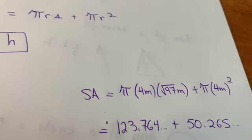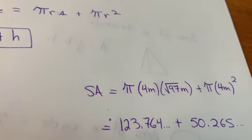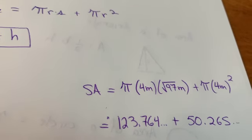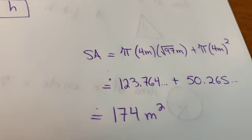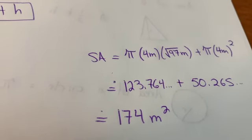As soon as you introduce π and square roots for that matter, you're going to get decimals that go on forever. Add these together and I rounded it to the nearest square meter because it was 174.0 something.